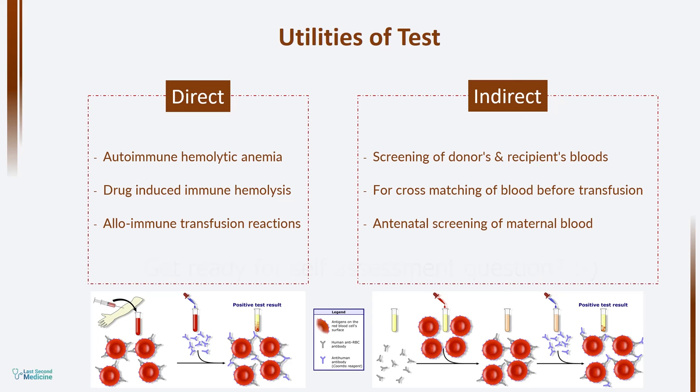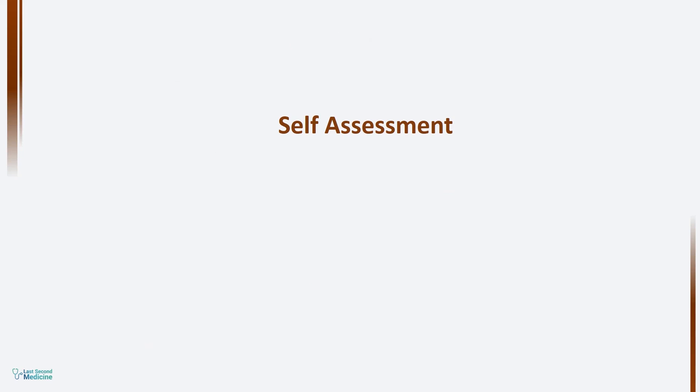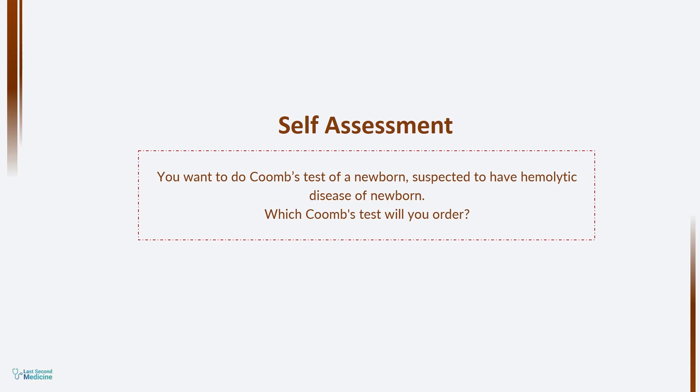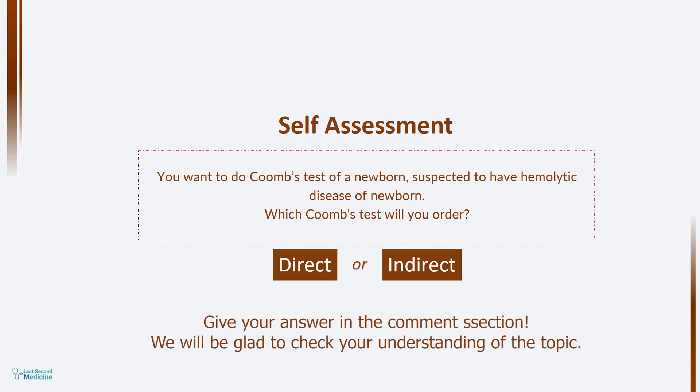The topic is finished here. Here is a question for you to check your understanding of the topic: You want to do a Coombs test of a newborn suspected to have hemolytic disease of newborn. Which Coombs test will you order — direct or indirect? Let me know your answers in the comments section below.